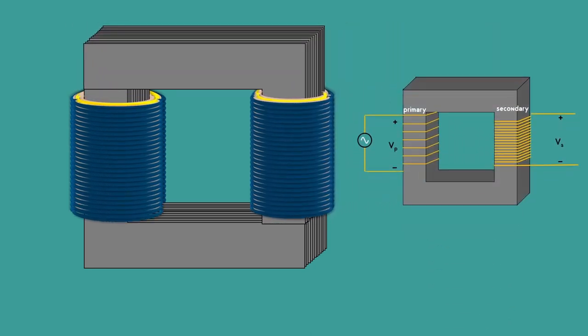To make it simple, in this example, I have placed the primary and the secondary winding on the separate limbs of the core.